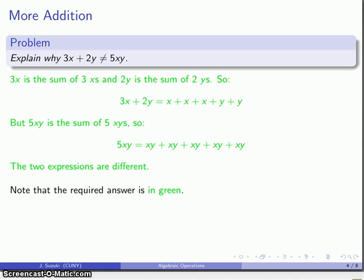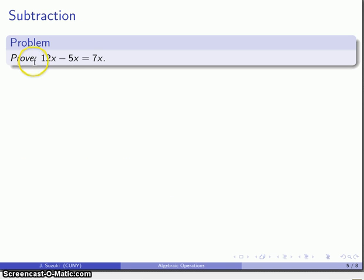Alright, well let's consider a different problem. How about let's do a subtraction: 12x minus 5x. And again, there's a bunch of common errors that show up when students try to do this problem.